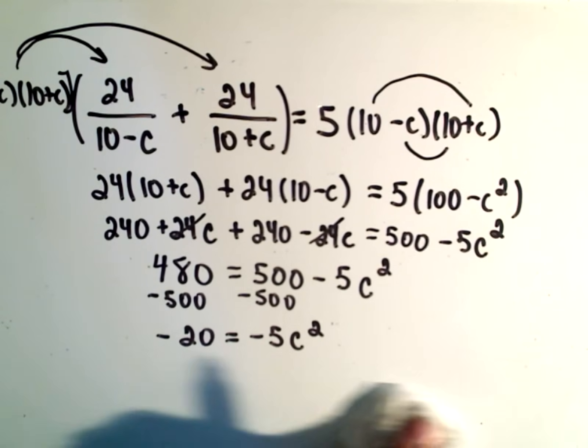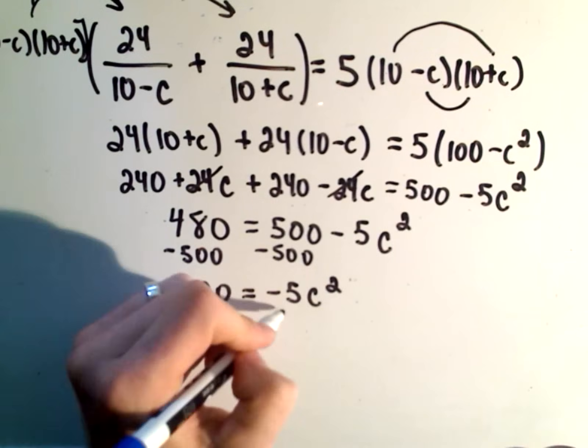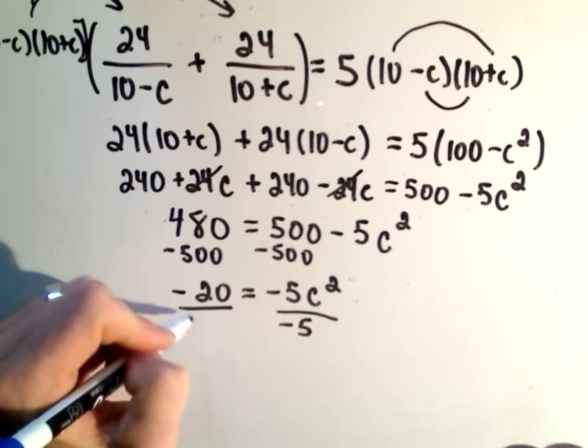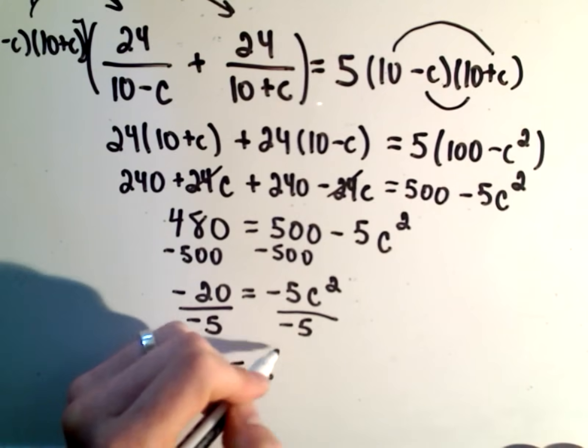So we're getting pretty close. Again, we're just trying to solve for C because that's the current. If I divide both sides by negative 5, on the left side, we'll get positive 4 equals C squared.